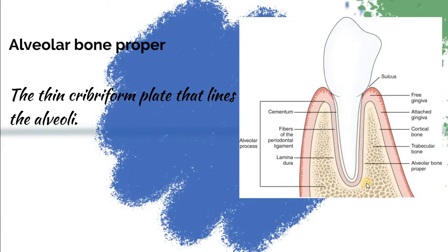We have alveolar bone propria. It is the thin cribriform plate that lines the alveolar bone or the alveoli — that thin line of bone lining the alveolar bone.